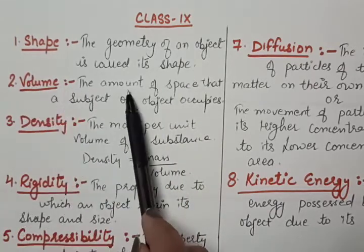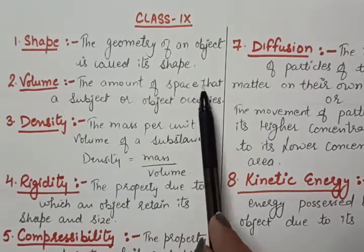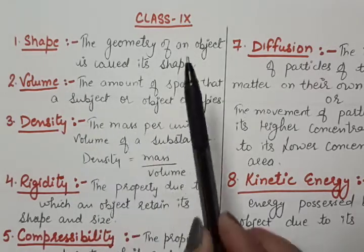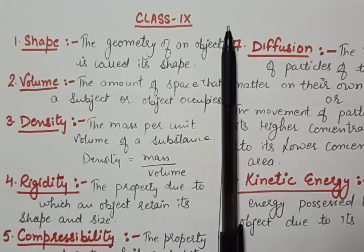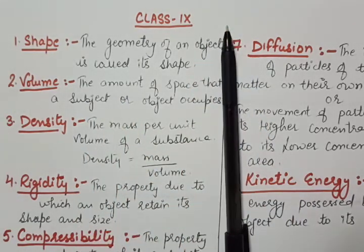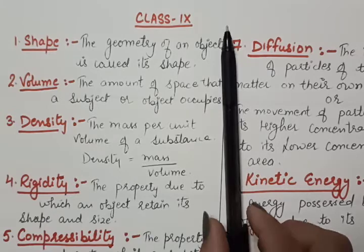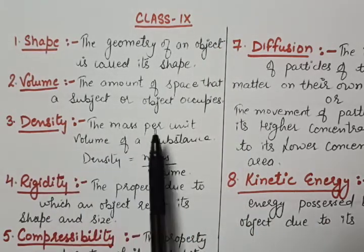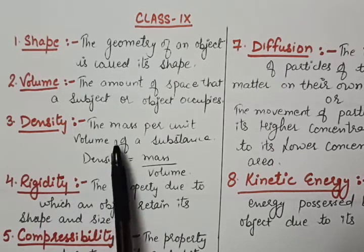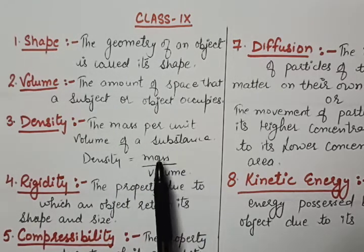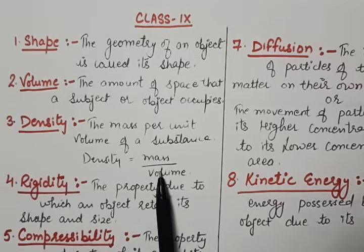Volume: the amount of space that an object occupies. Any object occupies a space, and how much space it is occupying, that is called its volume. Density: the mass per unit volume of a substance is called density — mass upon volume refers to density.